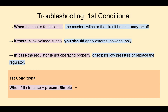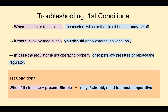When we use the first conditional in instructions, we can use 'when', 'if', and 'in case' plus the present simple, as in: 'when the heater fails to light', 'if there is low voltage supply', or 'in case the regulator is not operating properly'. And then you use 'may', 'should', 'need to', or 'must', or an imperative, as in: 'the master switch or the circuit breaker may be off', 'you should apply external power supply', or 'check for low pressure or replace the regulator'.